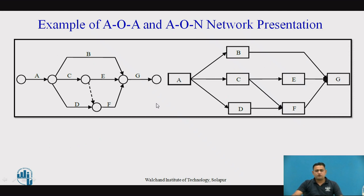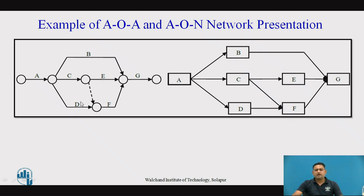This example shows the construction of a project network by AOA on the left-hand side and the same network represented by AON — the Precedence Network Diagram — on the right-hand side. The overall dependency is maintained in both network diagrams, but in the AOA there is a dummy activity, which is eliminated in the AON network diagram. This is the overall comparison between Activity on Arrow and Activity on Node network diagram constructions.